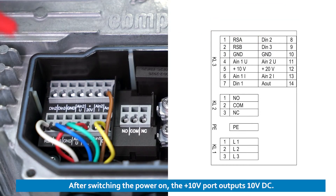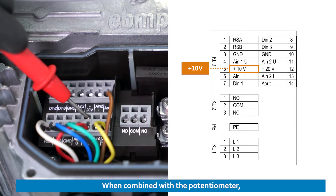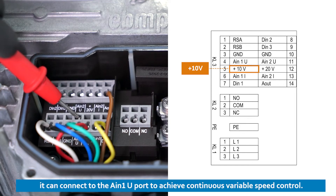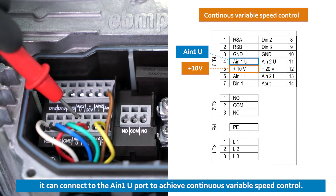After switching the power on, the +10V port outputs 10VDC. When combined with a potentiometer, it can connect to the AIN1U port to achieve continuous variable speed control.